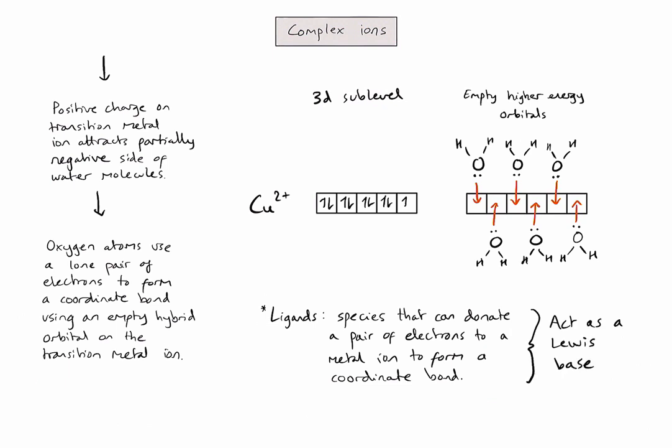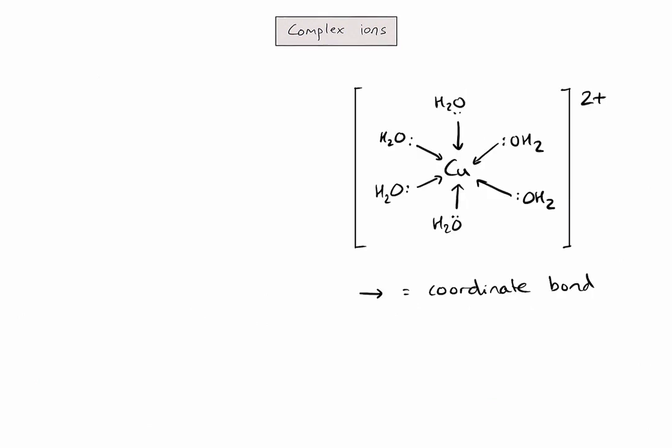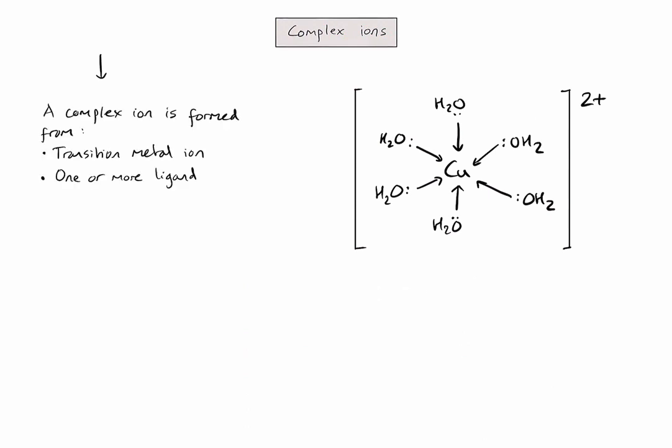Once this process has happened, we've now formed a complex ion. So let's draw a simple diagram of what that might look like. In this diagram, you can now see that my six water molecules have all formed coordinate bonds with the copper ion in the middle. And now, because this is considered as a single structure, the two positive charge from the copper ion is now shared technically over that whole structure. So I've used square brackets and a charge to show that. So we can say that a complex ion is formed from a transition metal ion and one or more ligands. In this case, the complex ion contains six ligands. So we say it has a coordination number of six. And we represent the chemical formula of this complex ion like this.